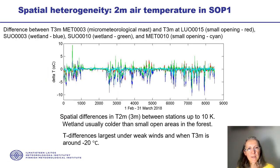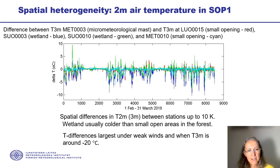We look now at the spatial heterogeneity of the 2–3 meter air temperature. This central plot shows the time series of the difference between the 3-meter air temperature at the micrometeorological tower and at other forest stations. We see that the 2-meter temperature difference between stations is up to 10 Kelvin, and wetland is usually colder than small open areas in the forest. The difference is largest under weak winds and when the 3-meter air temperature is around minus 20.